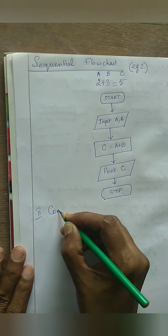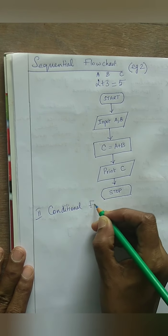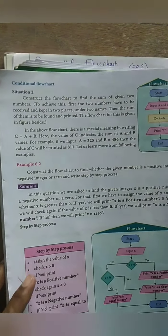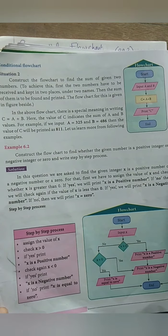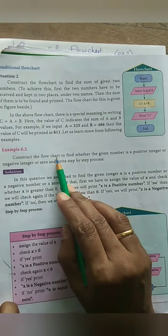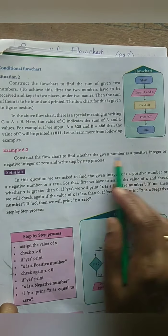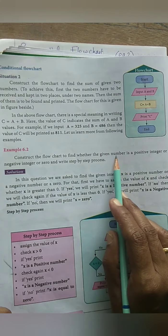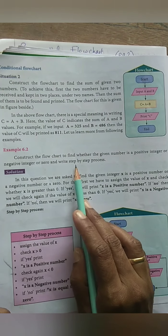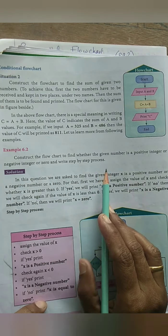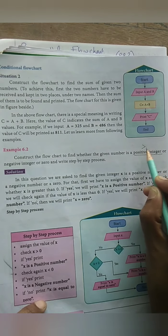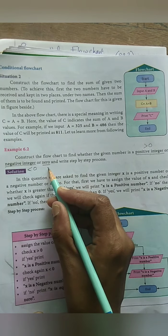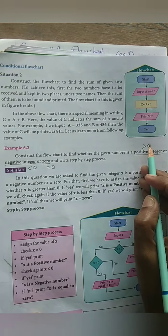Now coming to the second type: conditional flowchart. Take page 120. A problem is given: construct the flowchart to find whether the given number is a positive integer, a negative integer, or zero, and write the step-by-step process. Positive integer means it is obviously greater than 0, negative integer means it is less than 0, and 0 means it is equal to 0.